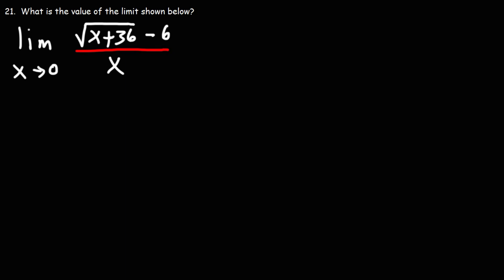Problem 21: What is the limit as x approaches 0 of the square root of x plus 36 minus 6 over x?